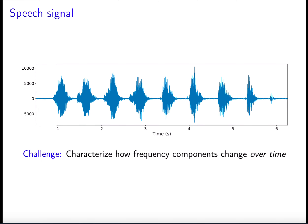Here we have a speech signal, and in order to analyze it, something we might want to do is determine how the frequency components in the signal change over time. It turns out that in this signal someone is saying 'no, no, no' and then 'yes, yes, yes' in Hebrew, and it might be useful to know what frequency components are mostly present when the person says 'no' or 'yes'.